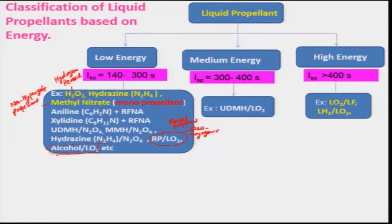It can be noted that liquid fluorine will act as oxidizer in this case where the liquid oxygen will be acting as a fuel, because liquid fluorine has higher electronegativity compared to liquid oxygen — this is a very interesting case where liquid oxygen is acting as a fuel. And liquid hydrogen and liquid oxygen, which are widely used propellants, are basically cryogenic propellants; liquid hydrogen and liquid oxygen can provide a specific impulse of around 450 seconds.